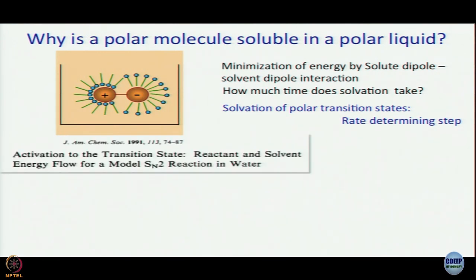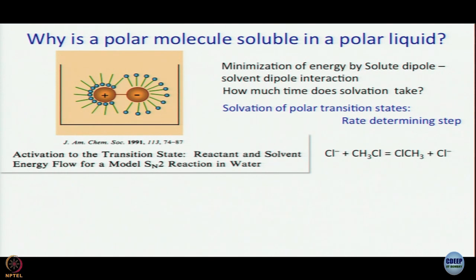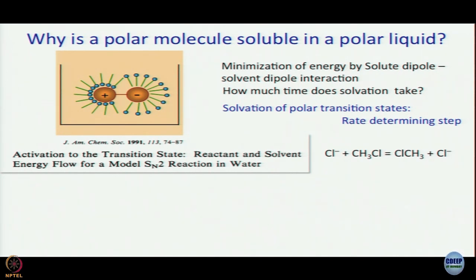There is a lot of literature on this — one paper published in 1991 studied activation of transition states, reactant and solvent energy flow for a model SN2 reaction in water. This reaction is chloride reacting with CH₃Cl forming Cl–CH₃ plus chloride. How do you know which chloride goes in and which goes out? You can do it easily by using different isotopes of chlorine. This reaction would have a symmetric double well potential, and it turns out that for this kind of reaction the rate-determining step is solvation.